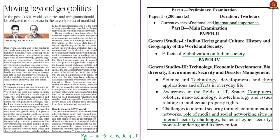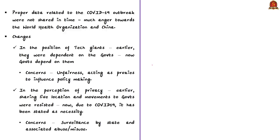This op-ed is with reference to the use of data in the post-COVID-19 world and discusses the changing idea of privacy during this pandemic. The authors start by telling that proper data related to the COVID-19 outbreak were not shared in time, resulting in much anger towards the World Health Organization and China. If we had a proper international framework on the use of data and evolved global norms of data governance in the pre-COVID-19 world, things would have been much easier for mankind.